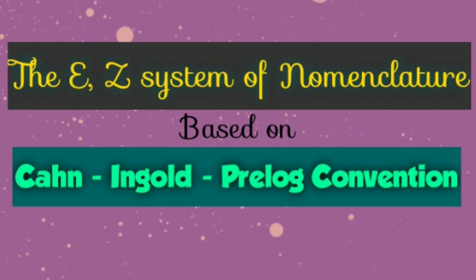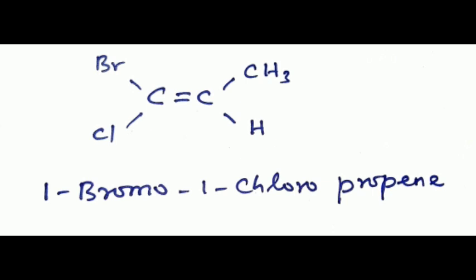If however the alkene is tri-substituted or tetra-substituted, these terms either become ambiguous or cannot be applied at all. For example, in the case of alkene 1-bromo-1-chloropropene, it is not possible to designate it as cis or trans since no pair of groups are the same.